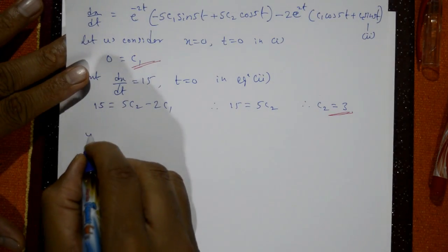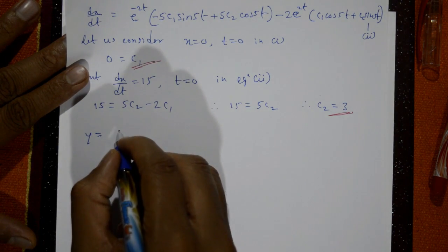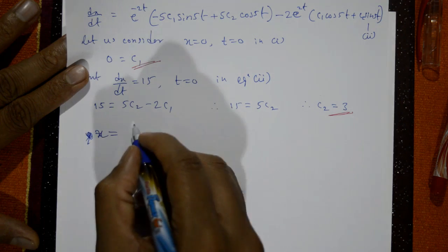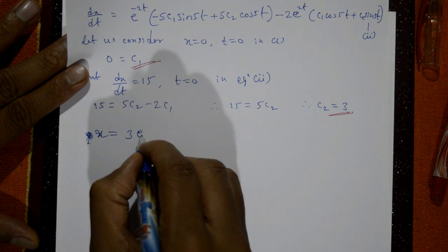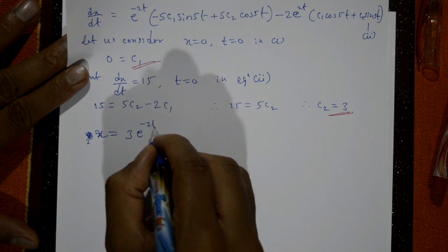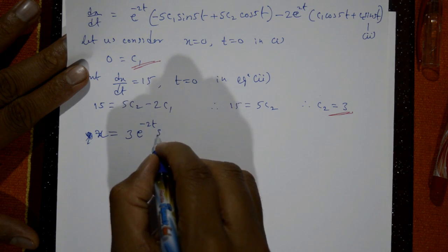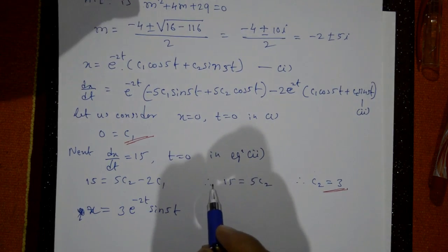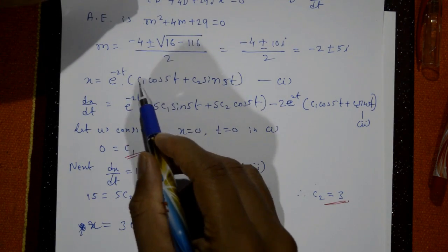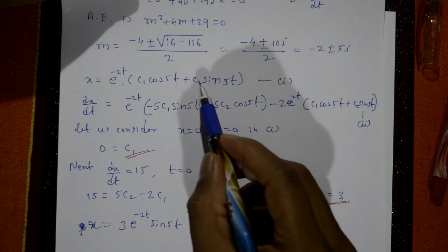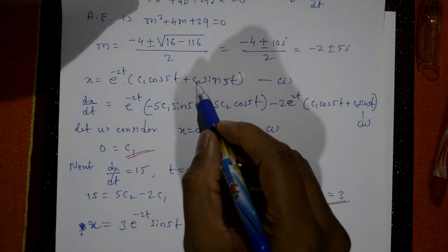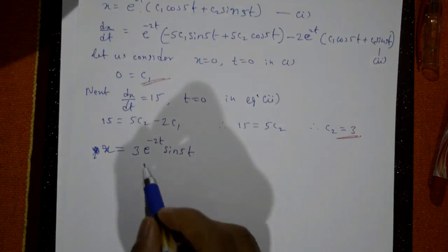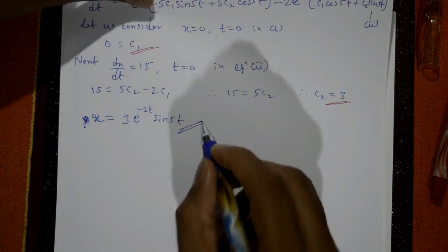Substituting c₁ = 0 and c₂ = 3 into equation number one, the required solution is x = 3e^(−2t) sin 5t.